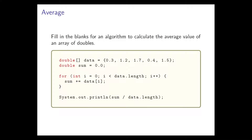Here's the answer — very short, this one. The two steps we have to go through besides initializing the sum are to add up the values and then divide the sum by the length of the data. Notice we're going to get an answer of the right type because sum is declared to be a double — remember how division works depending on whether the arguments are integers or doubles.